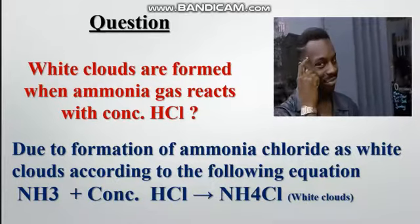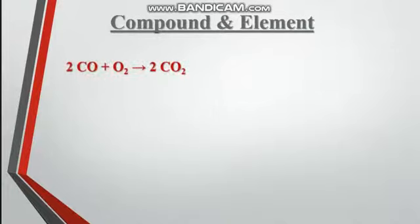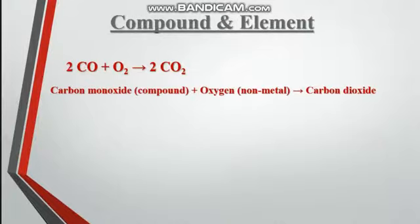The third type of chemical reactions is the reaction of a compound with an element. For example, 2CO plus O2 forms 2CO2. CO is carbon monoxide, which is a compound, and it reacts with oxygen to form carbon dioxide.